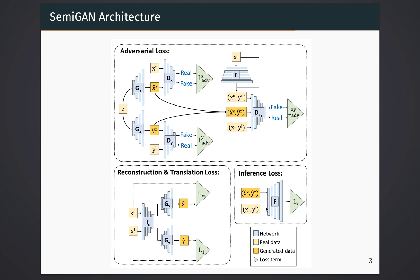Last but not least, we build an inference network F for target gene expression inference and use both the generated and labeled data for the training. It is notable that we introduce the collaborative training between the generative and inference network to strengthen the prediction, and also involve the unlabeled data X_U to improve the learning of the landmark gene distribution and provide more information for the training of the inference network.